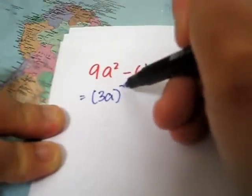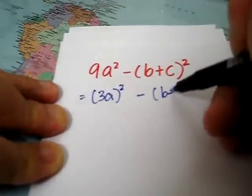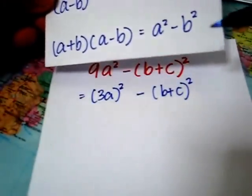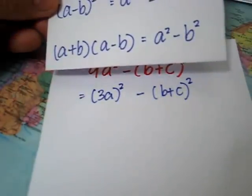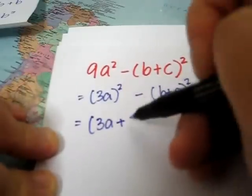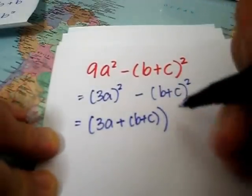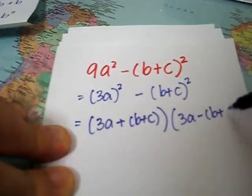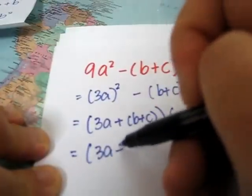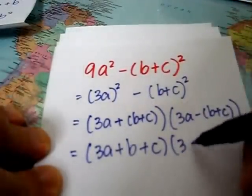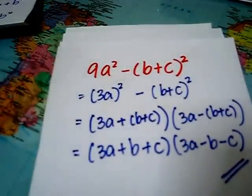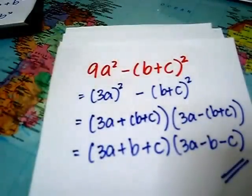9a holding square minus b plus c holding square. Now it looks like the third special product. And so we can write it as 3a plus b plus c and 3a minus b plus c. And we simplify we get 3a plus b plus c and 3a minus b minus c which will be the completely factorized form of 9a square minus bracket b plus c holding square.